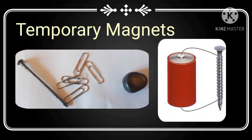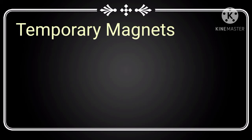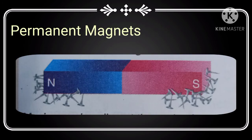Electromagnets and the magnets made from soft iron are temporary magnets. Those magnets which do not lose their magnetic property when the cause producing them is removed are called permanent magnets. The magnets made from steel are permanent magnets.